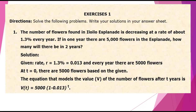For the solution, the given rate R equals 1.3%, converted to decimal: 1.3 divided by 100 equals 0.013. Every year there are 5,000 flowers. At T equals 0, there are 5,000 flowers. The equation that models the value V of the number of flowers after T years is V(T) equals 5,000 times the quantity 1 minus 0.013, raised to T.